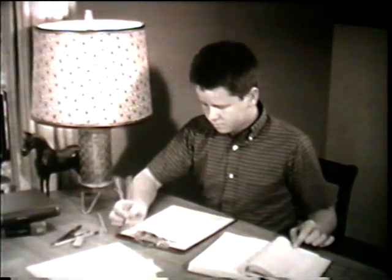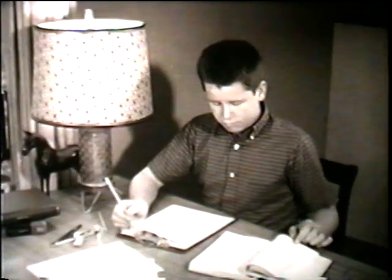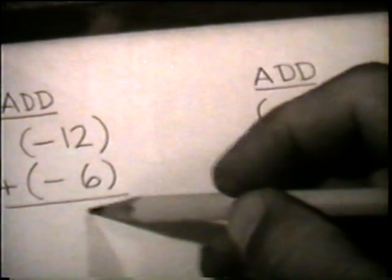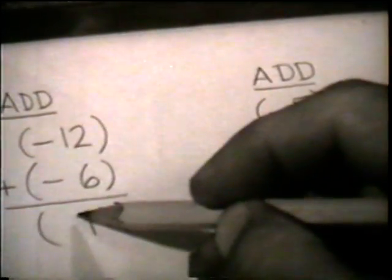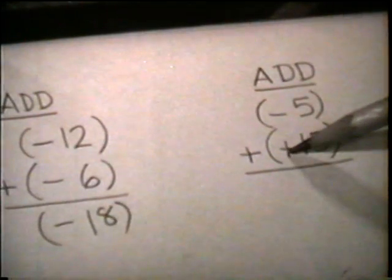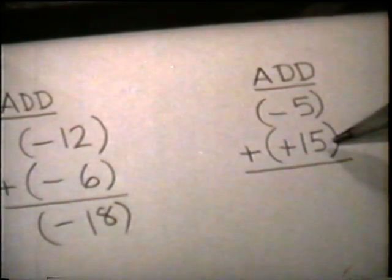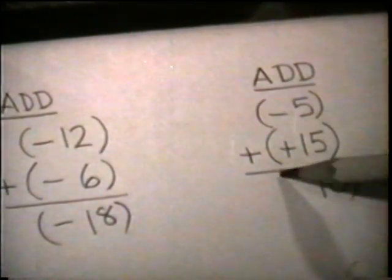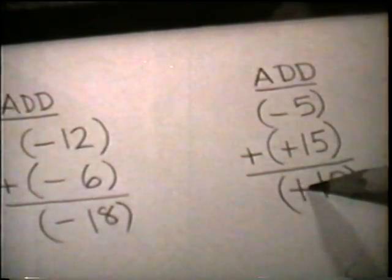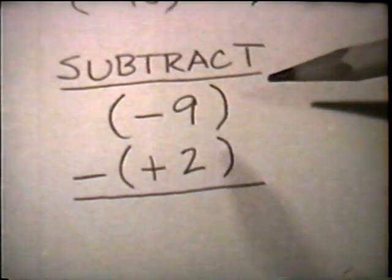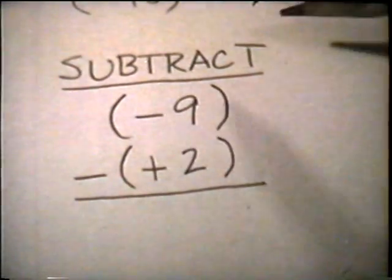Now let's review the rules for working with signed numbers. When adding two numbers with like signs, add the absolute values, keeping the same sign. If the numbers have unlike signs, keep the sign of the number with the greater absolute value and find the difference between the absolute values. To subtract signed numbers, mentally change the sign of the subtrahend and proceed as in addition.